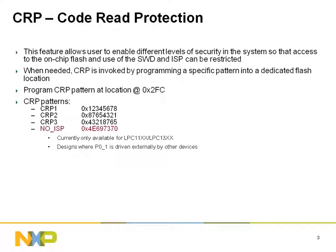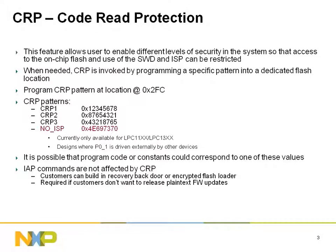If CRP levels 1 or 2 are accidentally invoked, you'll have to use ISP to erase the device before you'll be able to do any serial wire debugging. The No ISP mode is new to the 1100 and 1300 part families. Should you choose to enable CRP as a means of preventing design theft, field updates should also be taken into consideration. If you've taken the time to prevent people from accessing the flash memory contents, you probably don't want to release unencrypted binaries to end users for updating either. Thus, you may want to consider implementing an encrypted flash loader using IEP commands from inside of your application.